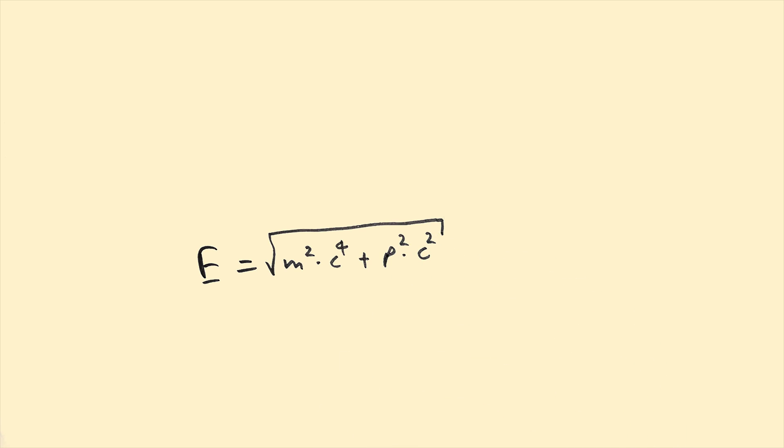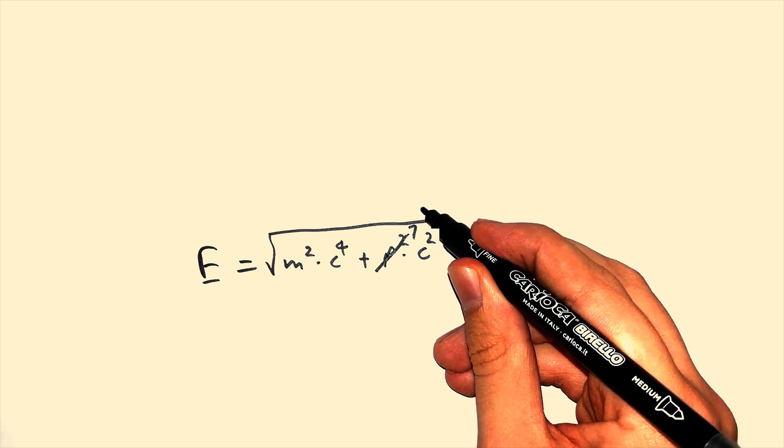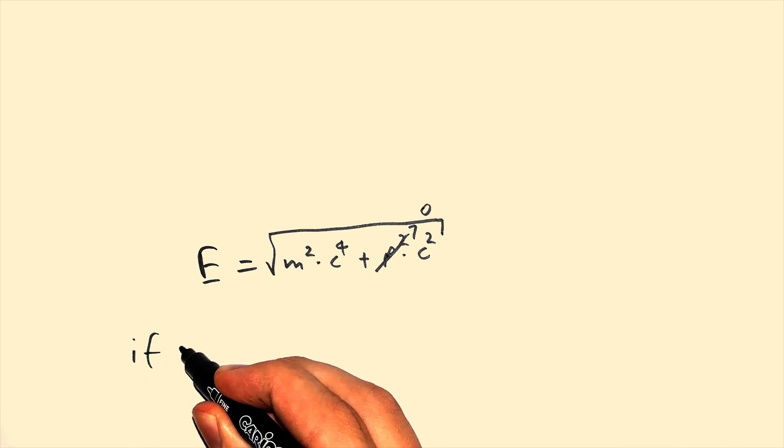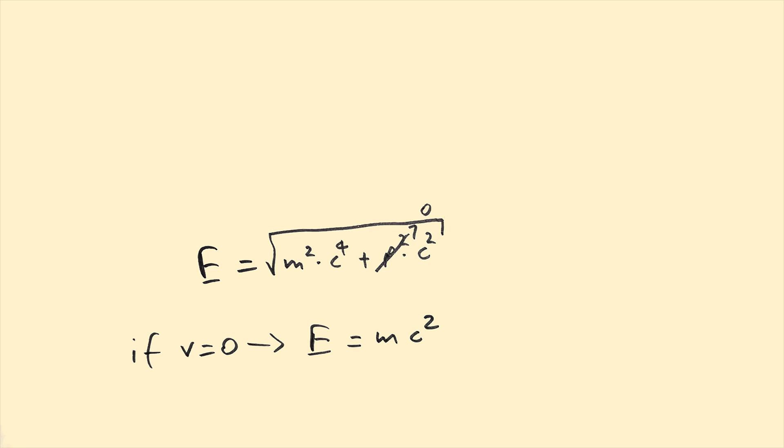As you can see, if the object we are talking about does not move, then the momentum part is 0, so the equation becomes E equals mc squared.